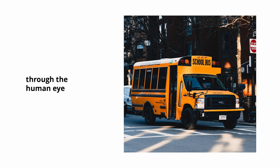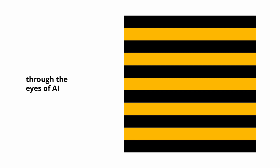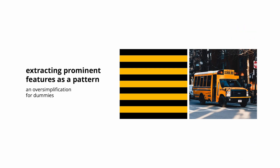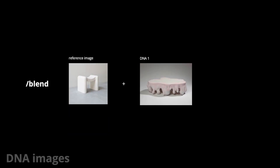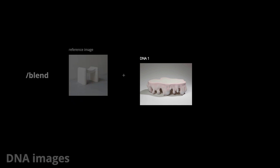On the other hand, DNA images are additional features that you want to add to your product. But before choosing them, let's look through the eyes of AI. To us, this may be a school bus, but to AI, it could be a bunch of black and yellow stripes. This is an oversimplification, but AI essentially extracts prominent features and recognizes them as a pattern. Therefore, for a DNA image to be effective, it should have no more than two prominent features. It should also have a plain background and a similar camera angle to the reference image, so that AI is able to easily recognize and extract these features while keeping the composition simple.